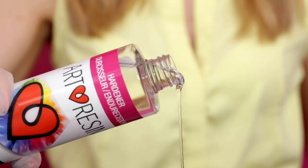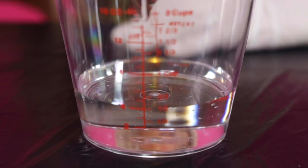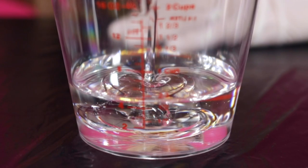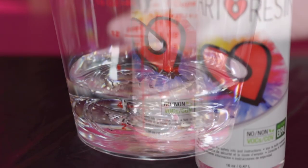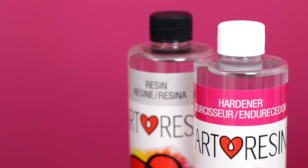With gloves on, pour by volume precisely equal amounts of resin and hardener into a mixing container. Remember to replace the proper cap on each bottle once you're done pouring. Black for resin, white for hardener.